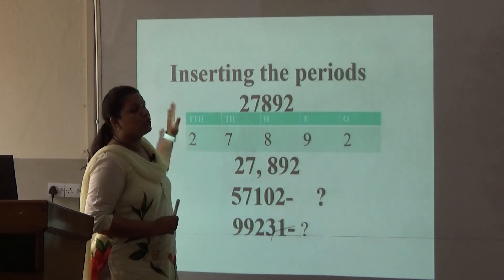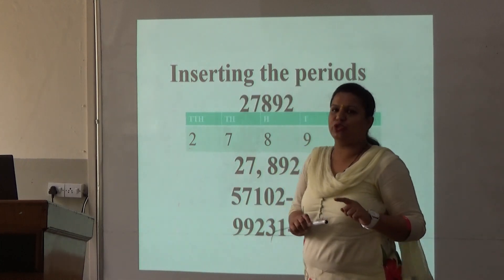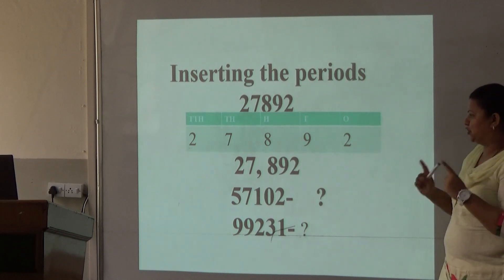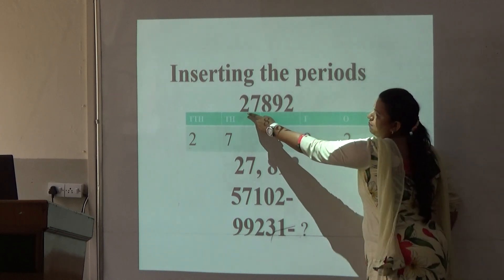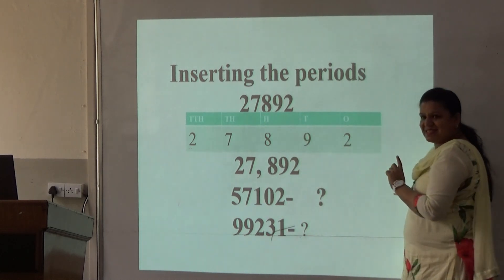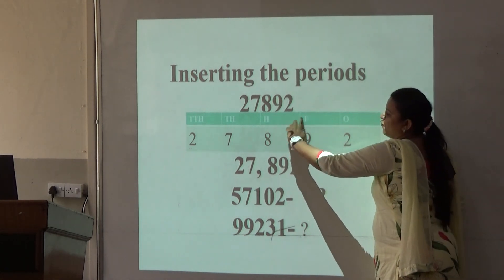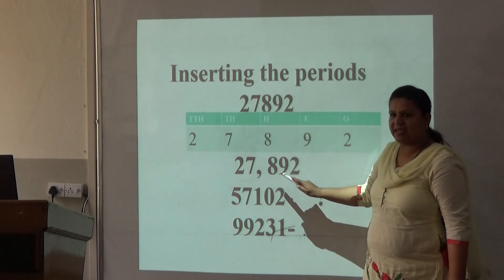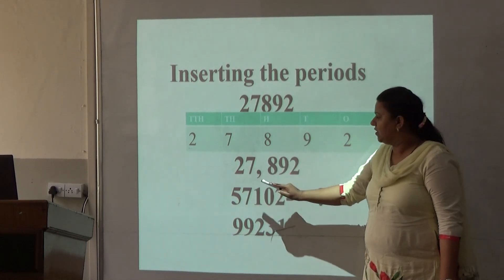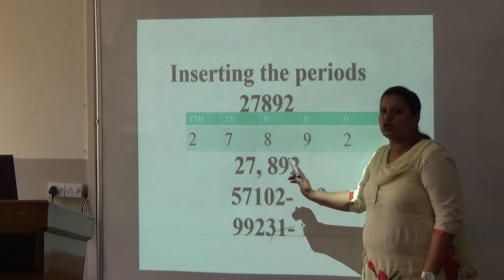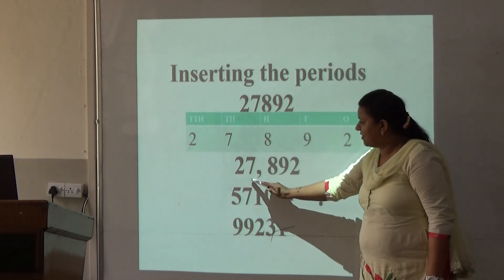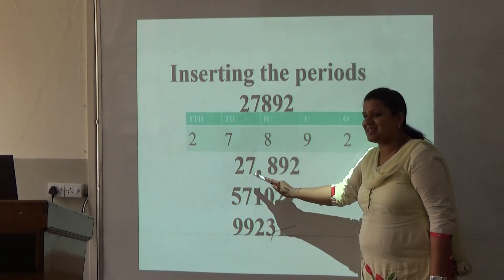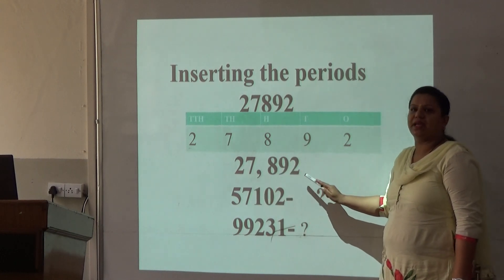Now let us learn how to insert periods. What are periods? As I told you, the 1's family has 3 members — that is 1 period. So if we read the number 2, 7, 8, 9, we will see that there are 3 members in the 1's family. When 1 family is completed, we insert a period. That is 2, 9, and 8 belong to the 1's family. We insert a period here to separate it from the 1000's family. 7 and 2 belong to the 1000's family. So how are we going to read this number? 27,892.